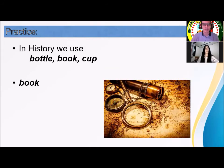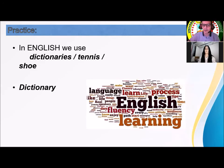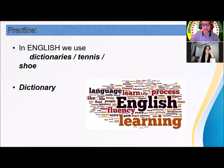Practice. In history, we have — or we use — a bottle, a book, or a cap. Obviously, a book. Why? We are searching about history, or we are reading. Estamos leyendo. Next: in English, we use a dictionary, tennis, or a shoe. What do we use in English? A dictionary, right? What is a dictionary? Diccionario. Correcto. We don't use a tennis or a shoe.